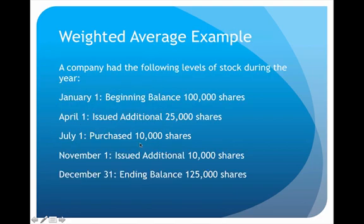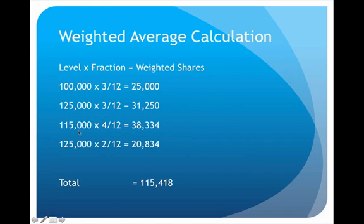Then the stock goes down 10,000 shares: from 125,000 down to 115,000. That stays the same from July 1st to November 1st — July, August, September, October — four months. So 115,000 shares for four out of 12 months gives a weighted number of 38,334.